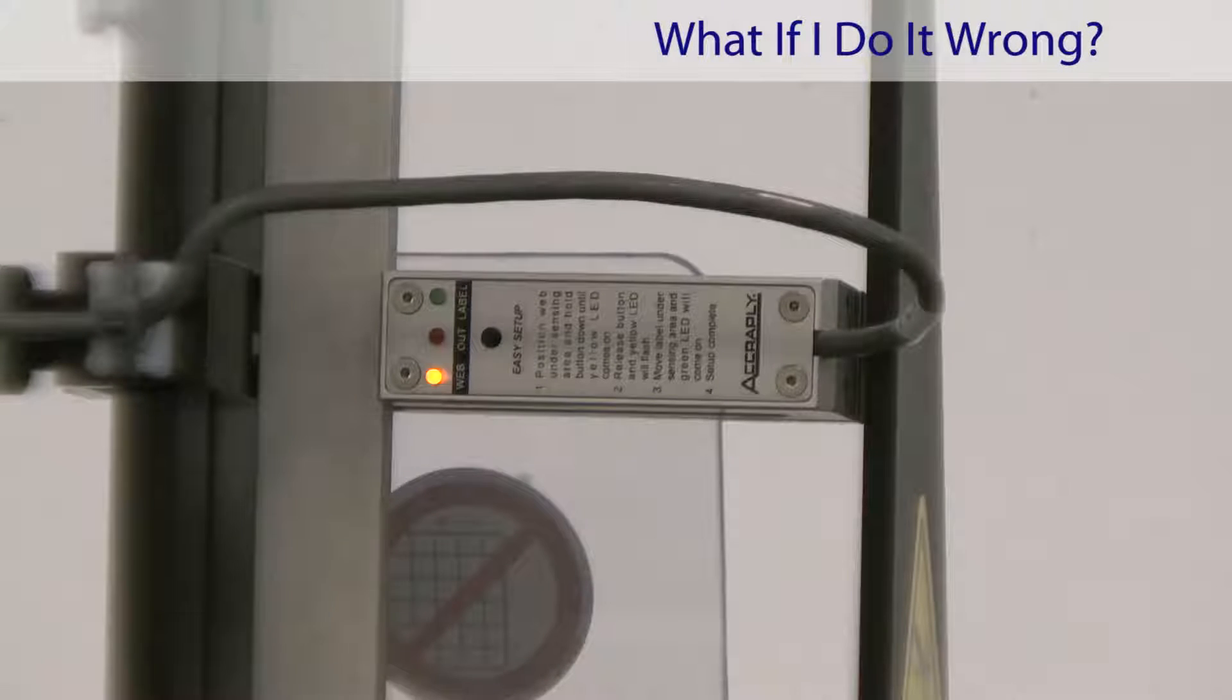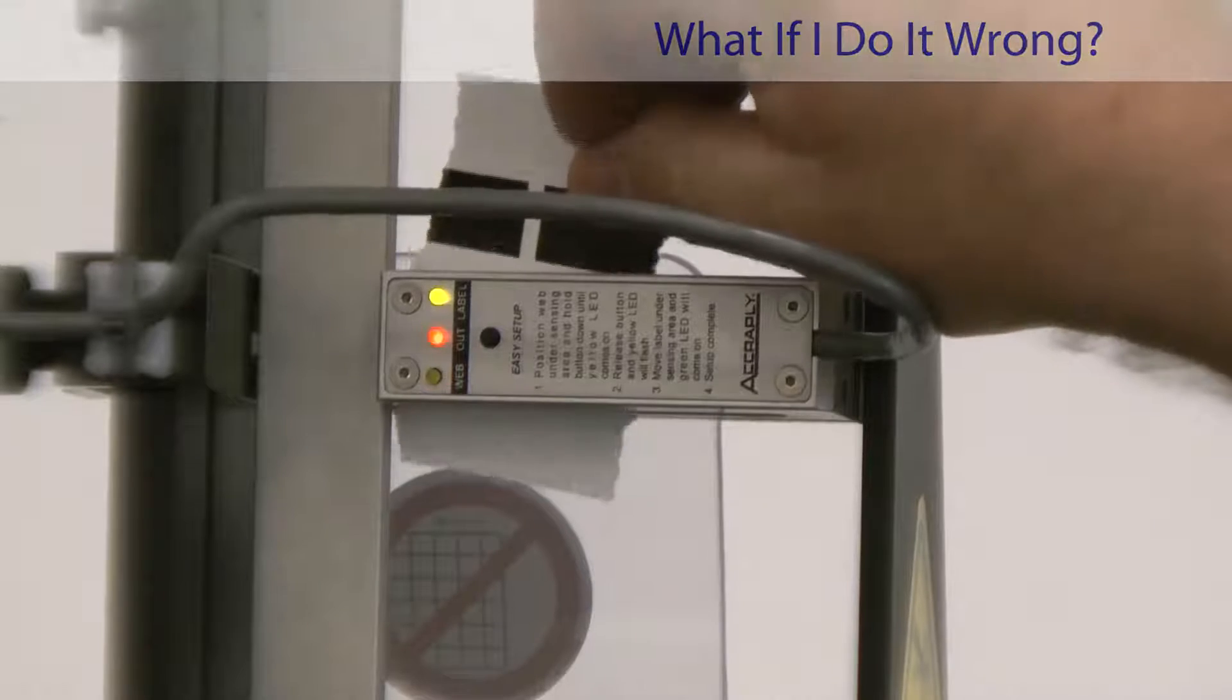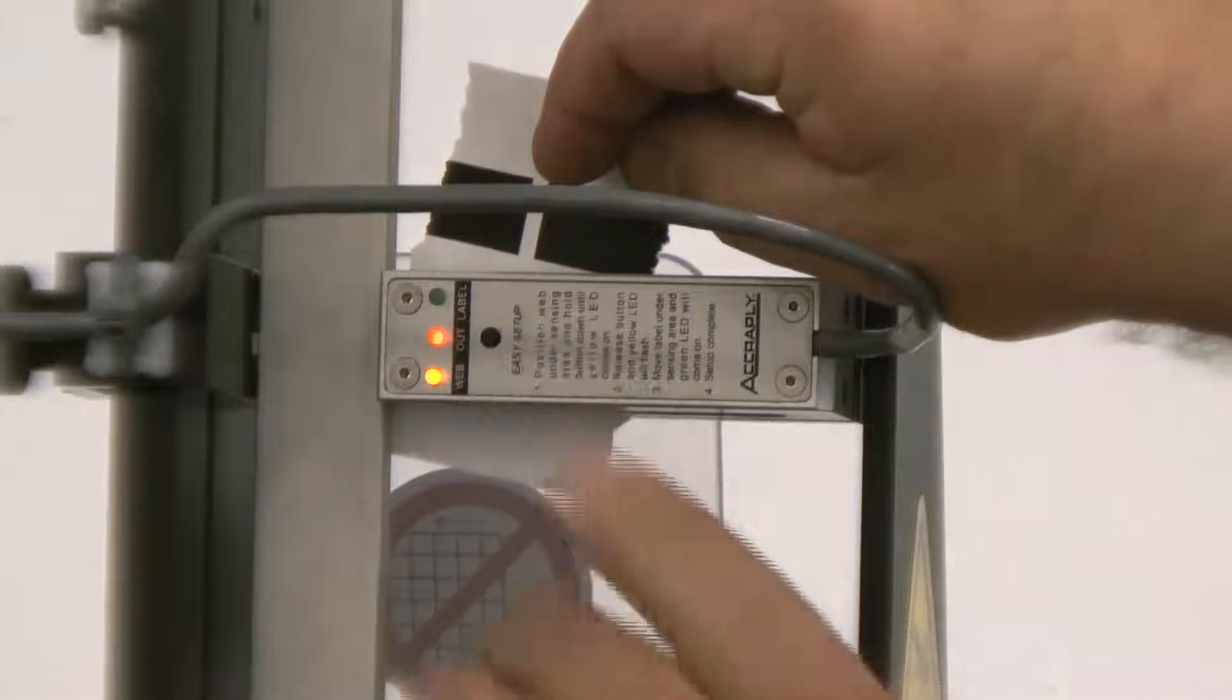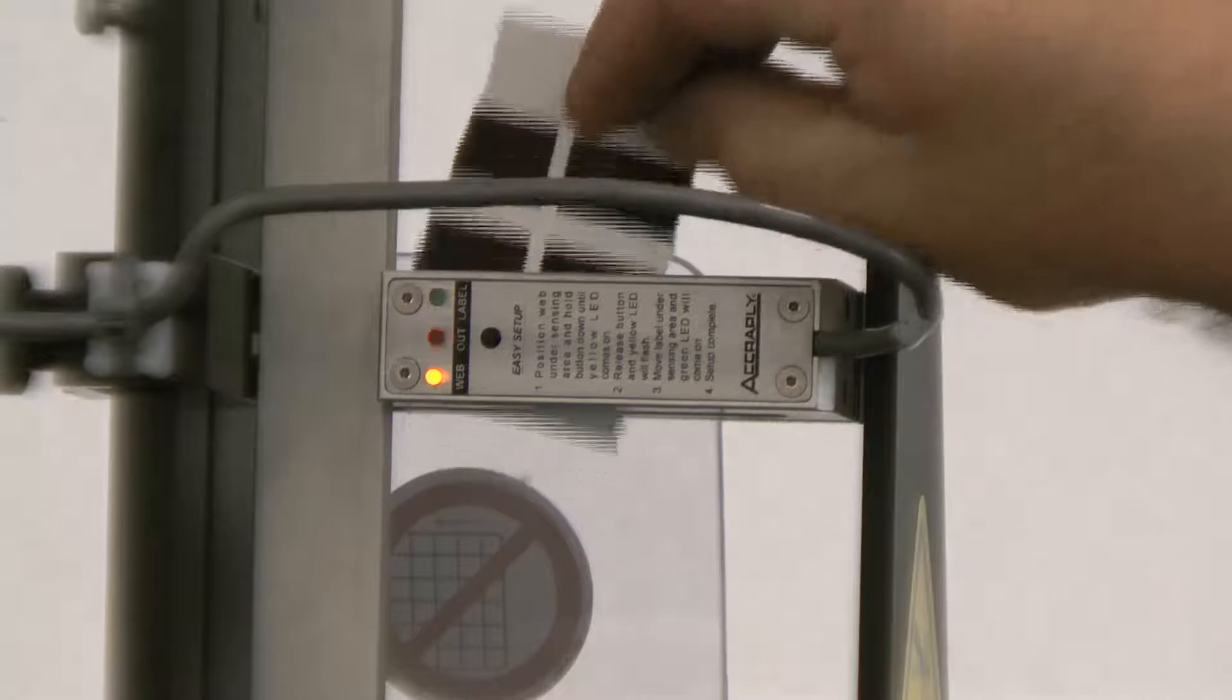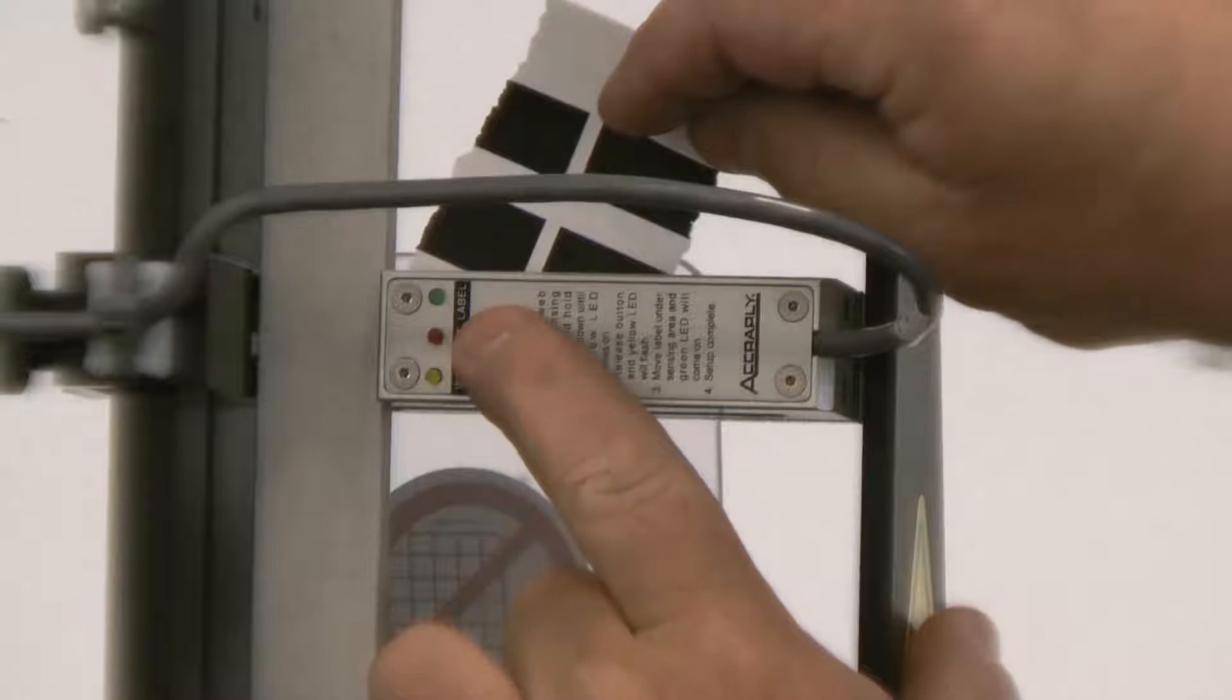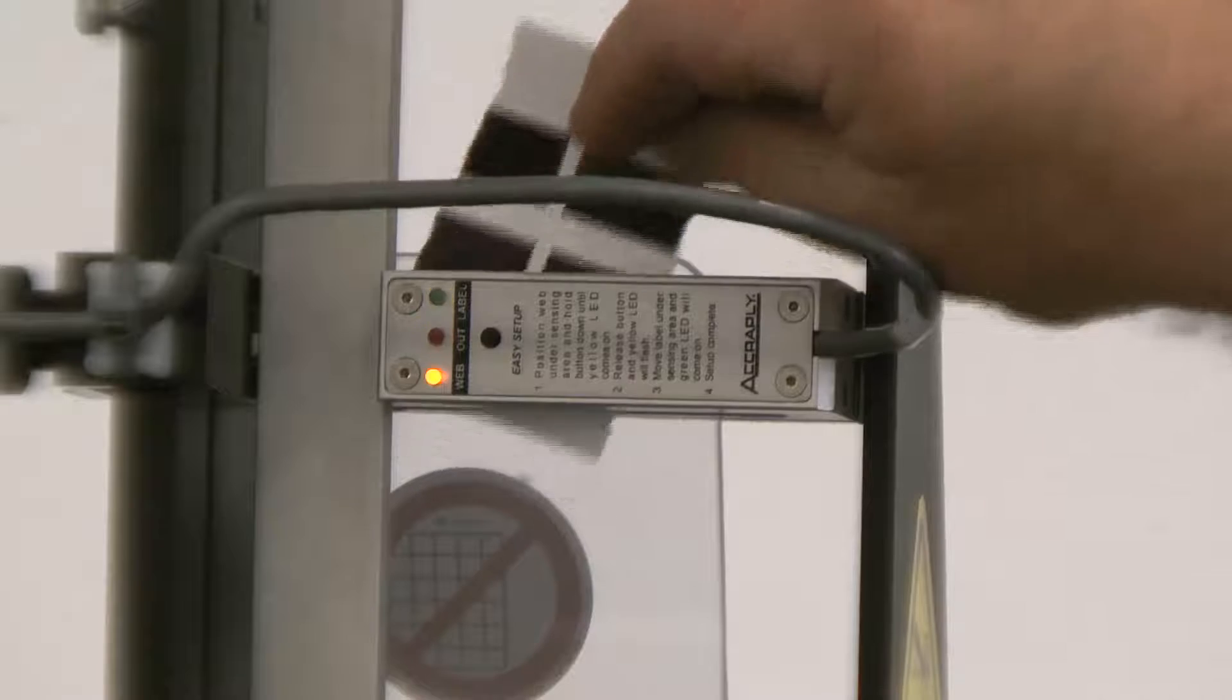When training the label sensor, if you happen to put the black portion under the photo eye when you push the train button, the sensor will alert the operator by blinking the red light. In this case, you must remove the material, put the white under it, hold the button down again, and train the sensor.